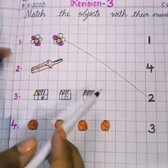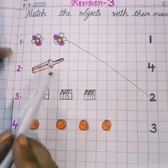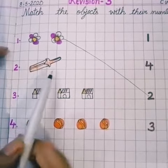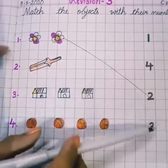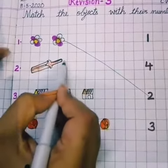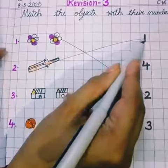Slowly, slowly you have to count the pictures. What is this? Bat. Only 1 bat is there. Here, where is 1? Here is 1. So you have to match it with 1. Okay.